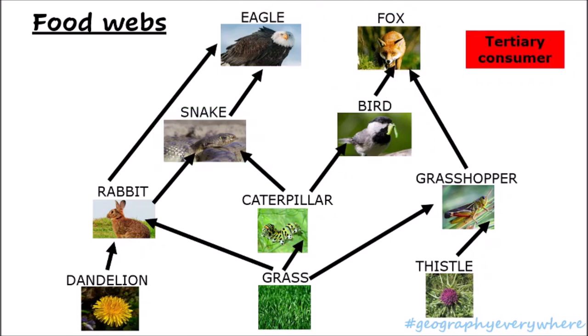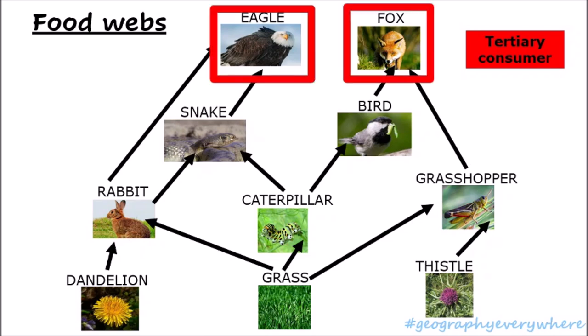Finally, let's look at the tertiary consumer. The tertiary consumer is the one who eats the secondary consumer. In this case, we have two tertiary consumers. First is the eagle — we can see the food chain from the dandelion to the rabbit, who's the primary consumer, to the snake, who's the secondary consumer, and the eagle, who's the tertiary consumer.